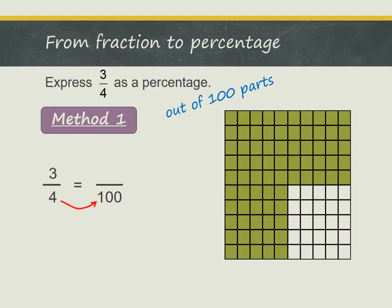To get from 4 to 100, we multiply by 25. So in the same way, we can multiply the numerator 3 by 25. And we get 75. So now we have the fraction 75 out of 100, and we can express this as a percentage, 75%.